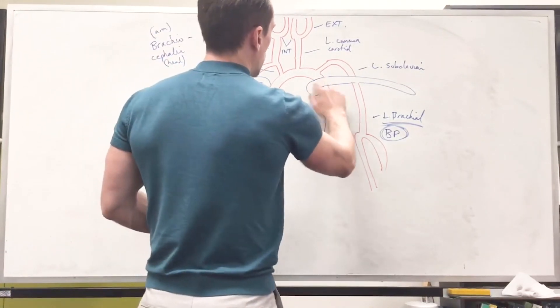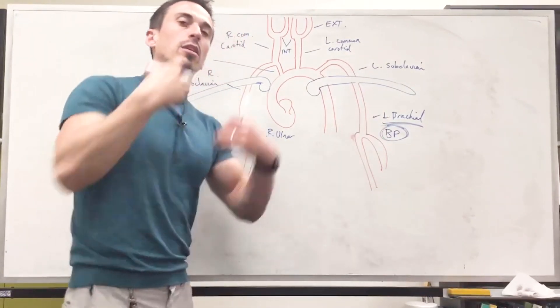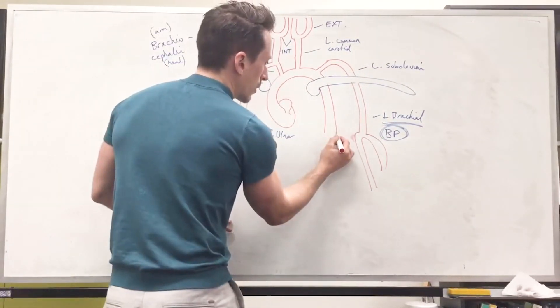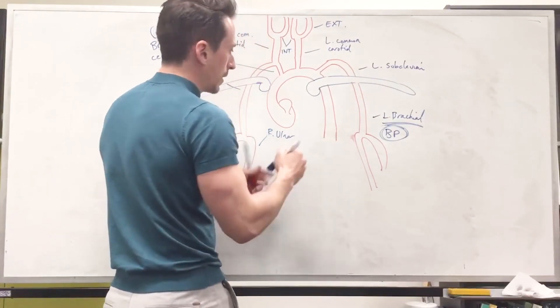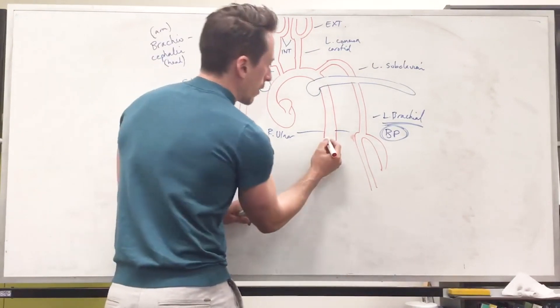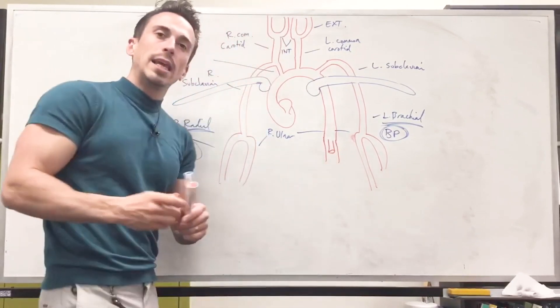Now, let's continue with the aorta. The aorta is going down. There's going to be a couple of branches that are going to feed the esophagus, feed various particular areas, but it doesn't matter. We're going down. We go through the diaphragm. So we're going through the diaphragm, and as we go down through the diaphragm, there is an immediate branch that comes off, which is called the celiac trunk.